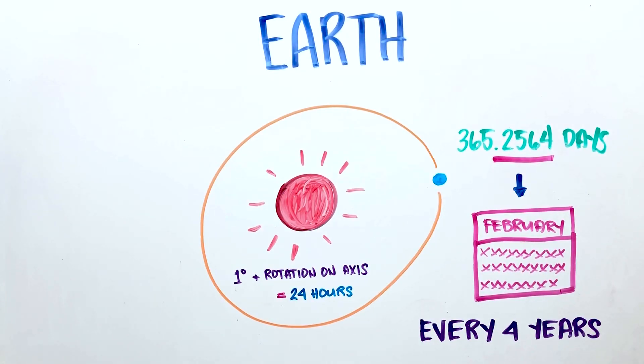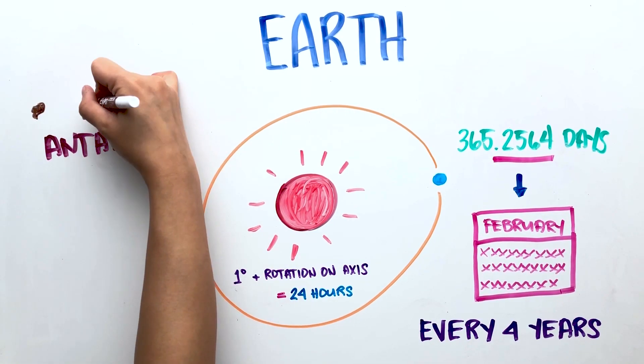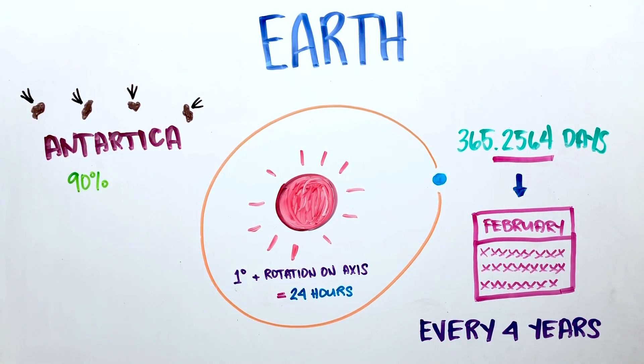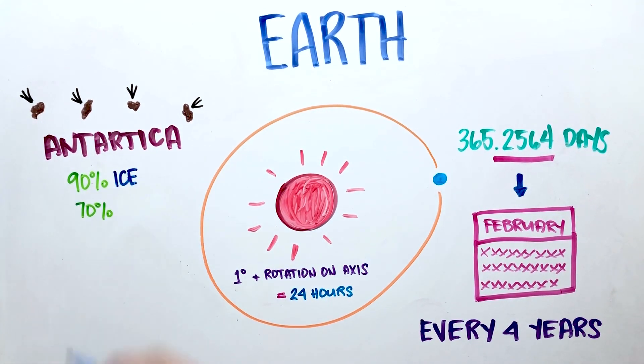More meteorites have been found in Antarctica than anywhere else in the world because of its snowy landscape and little vegetation. It also holds about 90% of Earth's ice and 70% of Earth's fresh water.